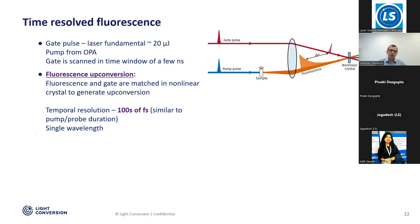So what you measure is only one wavelength at a time. The fluorescence is not really intensive — you have really low signal, and it's not so easy to match this fluorescence and gate pulse on the crystal to get the upconversion signal.